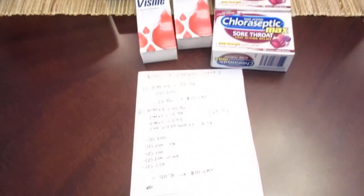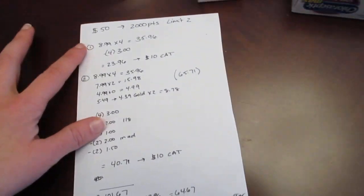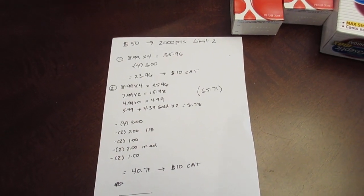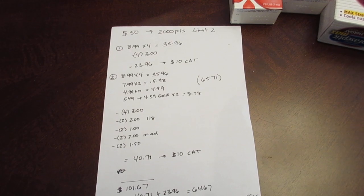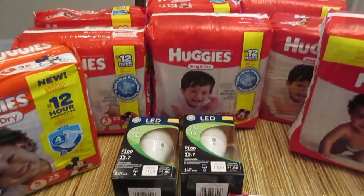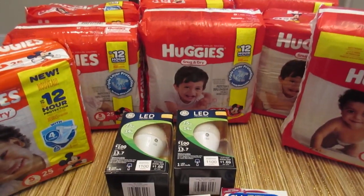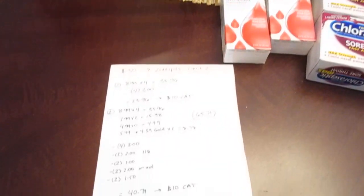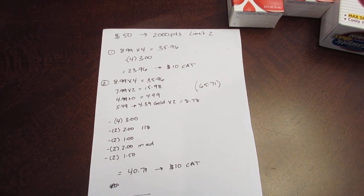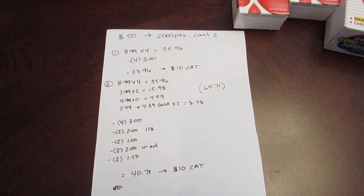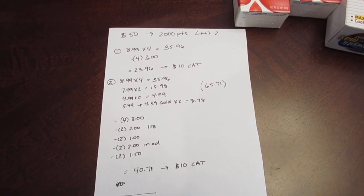So this is what I did. It's spend 50, get back 2,000 points, with a limit of two. The first thing I did is I purchased four of the Huggies Snug and Dry, four of the diapers at $8.99 each. And I had four of the $3 printable coupons from coupons.com for the Snug and Dry. So I paid $23.96.